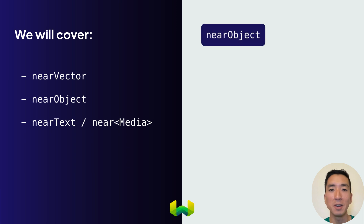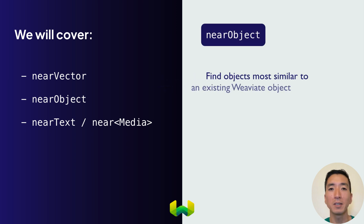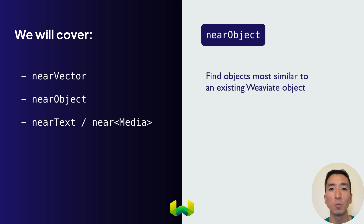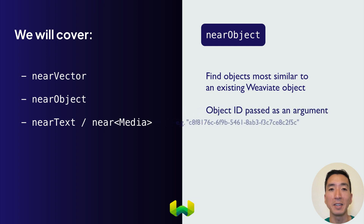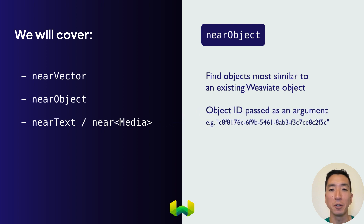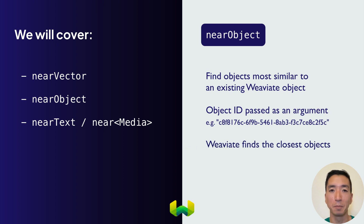Or you can use the near-object parameter. This one is used to find objects similar to an existing Weaviate object. With near-object, you specify the object to Weaviate by its unique ID, and Weaviate returns the most similar objects based on their vector representations.